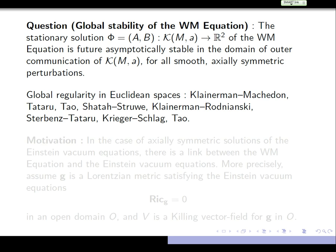The question of global regularity of wave maps has been studied a lot. In Euclidean space, there's a very good theory in two dimensions. I'll put a few names — probably missing many — starting with Klainerman–Machedon, Tataru, Tao, Shatah–Struwe, Klainerman–Rodnianski, Krieger–Schlag, and Tao. These are some of the works on regularity of wave maps in Euclidean spaces.